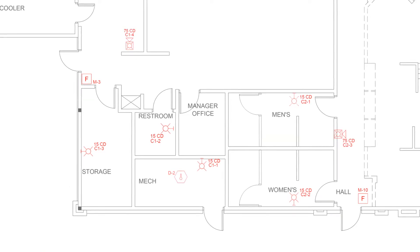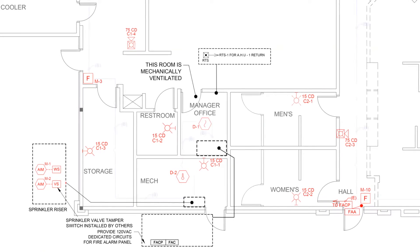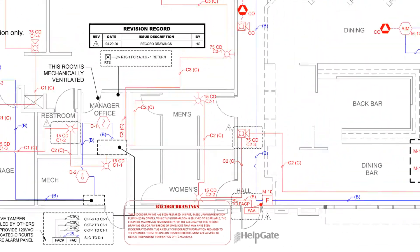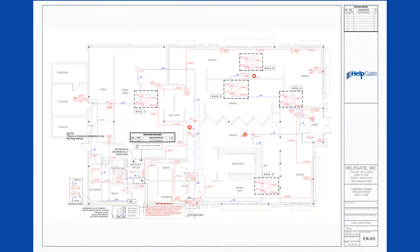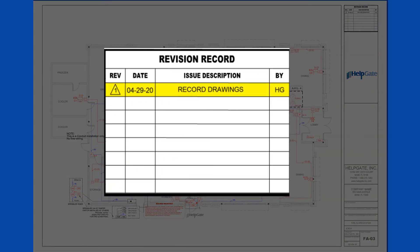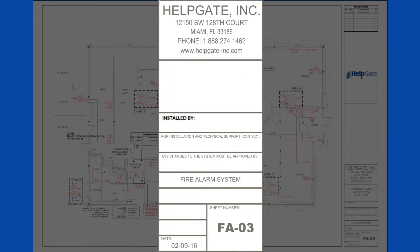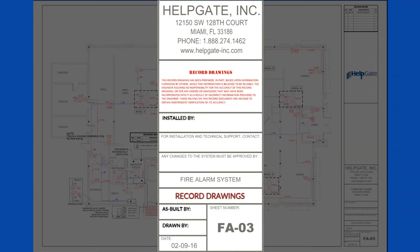To ensure their accuracy, record drawings are signed by the contractor with a written certification attesting to their correctness. The title block of professional record drawings also includes the clouding of deviations from the original approved plans, the name of the installation contractor that prepared the as-built drawings, the name of the CAD drafter, and the words record drawings stamped on all sheets with a special disclaimer. Very important.